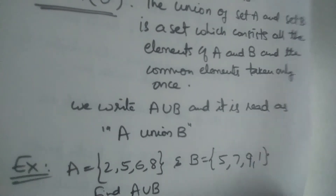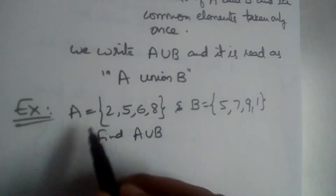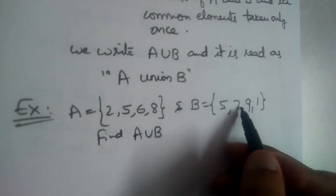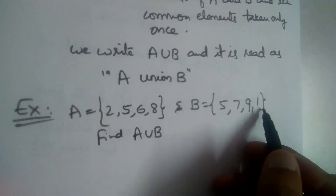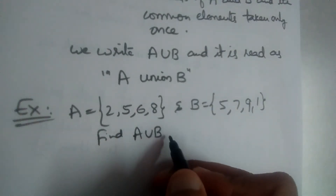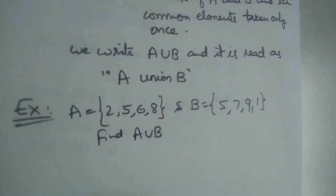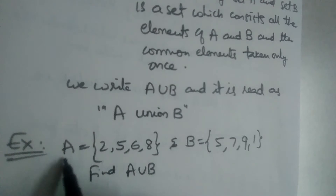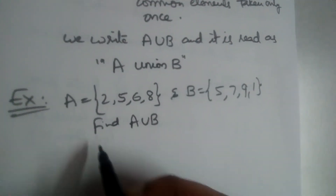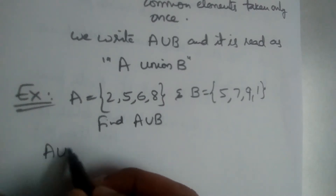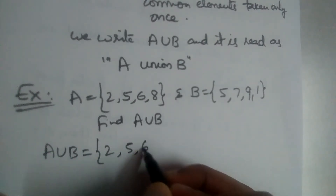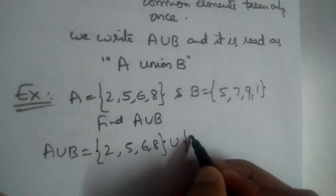We have an example here. A is equal to {2, 5, 6, 8} and B is equal to {5, 7, 9, 1}. Find A union B — all the elements present in A and all the elements present in B. So let us write A union B.